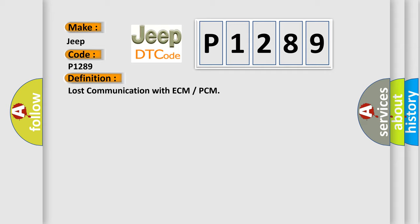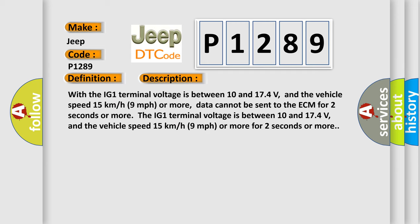And now this is a short description of this DTC code. With the IG1 terminal voltage between 10 and 174 volts, and the vehicle speed 15 kilometers per hour (9 miles per hour) or more, data cannot be sent to the ECM for 2 seconds or more.